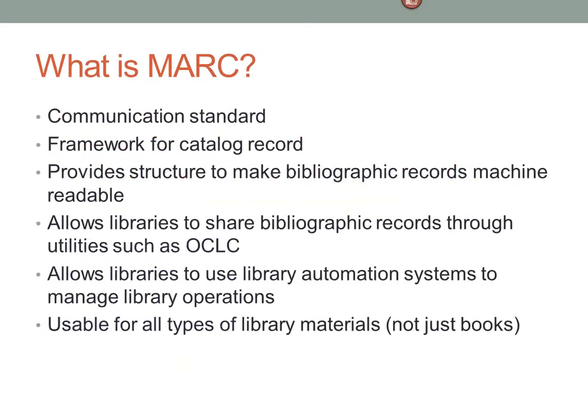We're going to jump in. This covers the very basics of cataloging, particularly MARC encoding, which is what we currently use in our systems including Koha. MARC stands for Machine Readable Cataloging — it's a communication standard. You can think of it as a framework for a catalog record. The RDA rules tell us what information to put in our record, and MARC is the framework or wrapper that goes around it and makes it readable by computers. It's the reason we can share bibliographic records through OCLC or the Library of Congress.